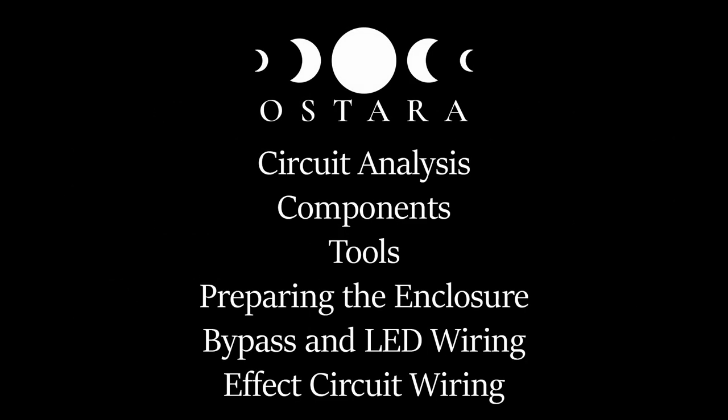We're going to start with a circuit analysis. If you're not interested in that you can skip ahead to the other parts but here I'm going to walk you through all of the parts of the circuit and what each component does. We're going to talk about the components that are included in the kit, the tools that you're going to need, and we are going to prepare the enclosure that is screwing on the foot switch and the LED and things like that onto the enclosure and then we're going to solder and wire up the bypass and LED circuit and then finally the effect circuit.